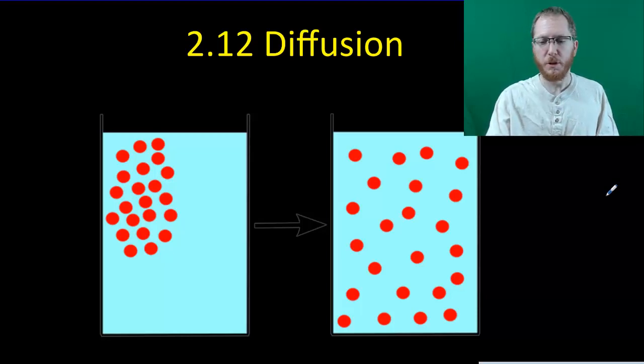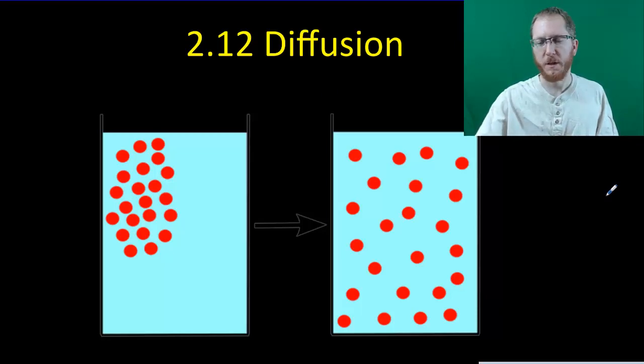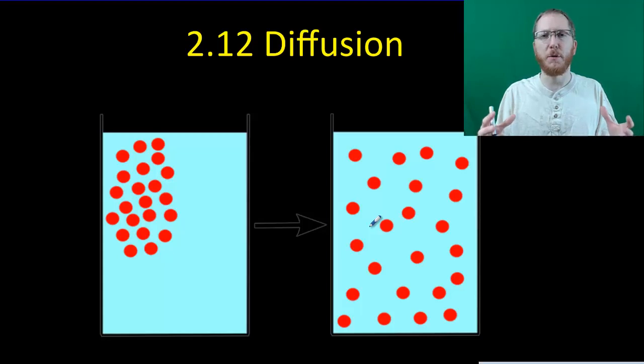That's going to be diffusion, which is a type of passive transport. This will be something where you'll take a bunch of particles that are smashed together initially, and we're going to have them spread out. They're going to basically move away from each other until they're about equally dispersed in whatever you're talking about.